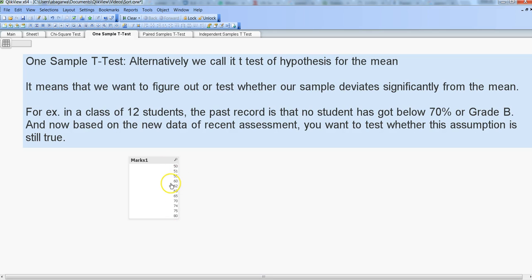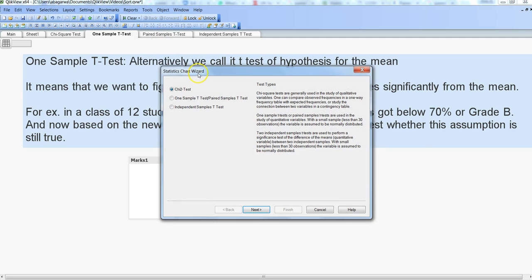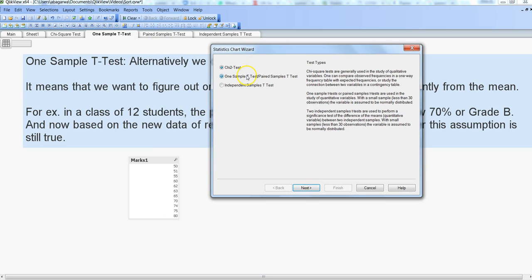So first thing is to do the test. Let's go into the tool, Statistics Chart Wizard, and then select the one-sample test and click next.